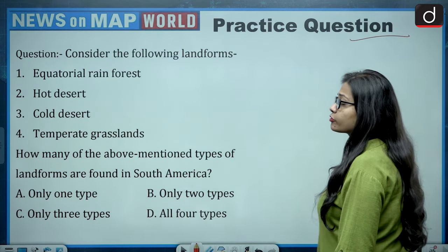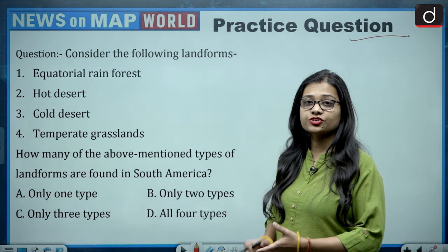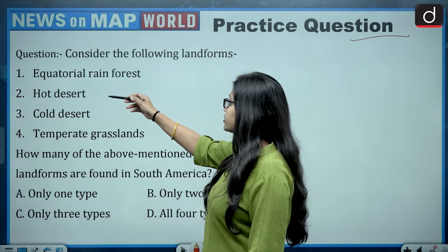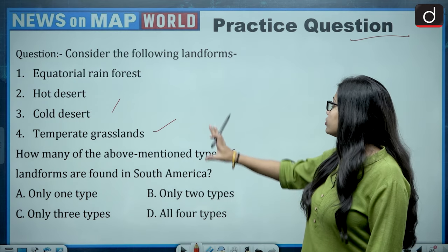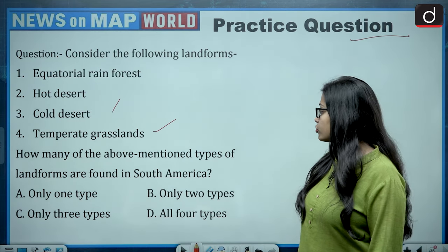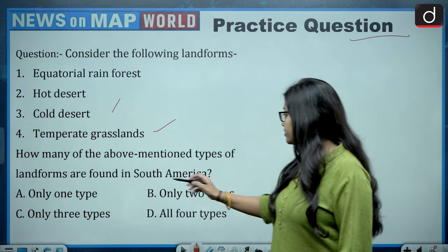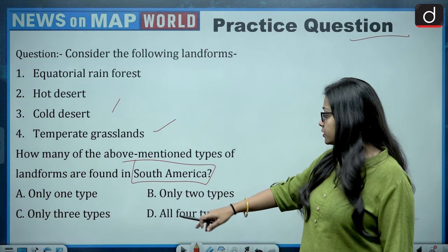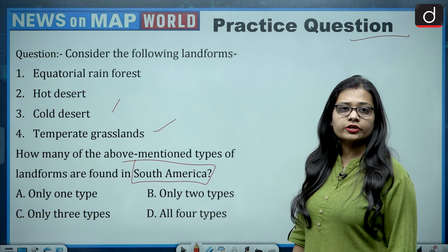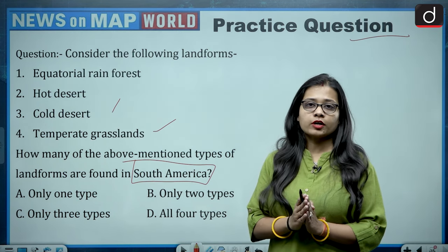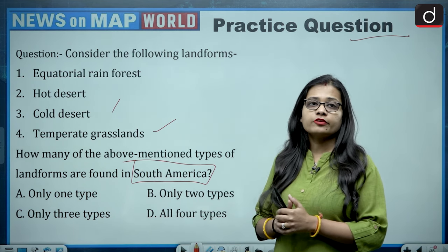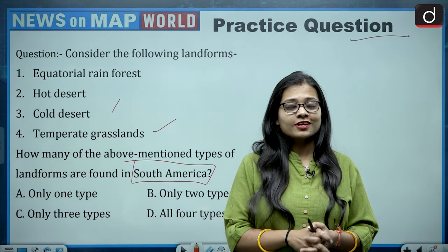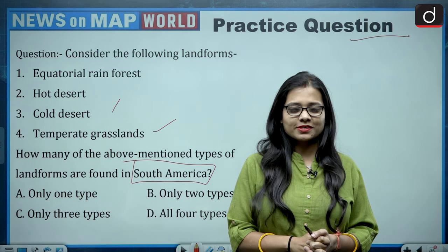Now for the practice question: consider the following landforms — equatorial rainforest, hot desert, cold desert, and temperate grasslands. How many of these landform types are found in South America? Options are: only one type, only two types, only three types, or all four types. Look at both the political and physical maps of South America and give your answer in the comment section. That's all for today — thank you for watching, keep reading and keep writing.